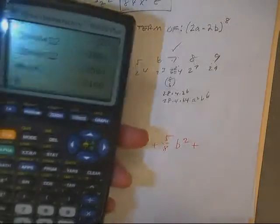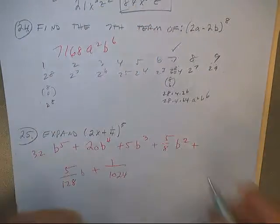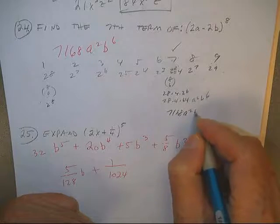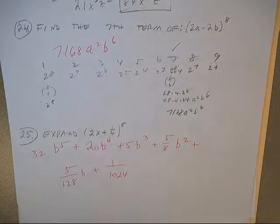Another 2. 71, 68... 37, 168, a squared, b^6. We'll be back.